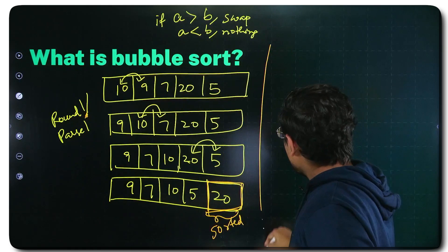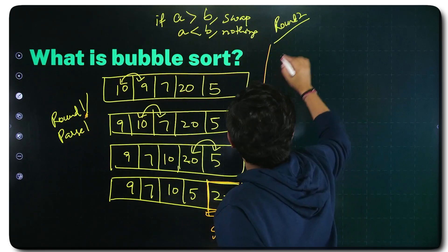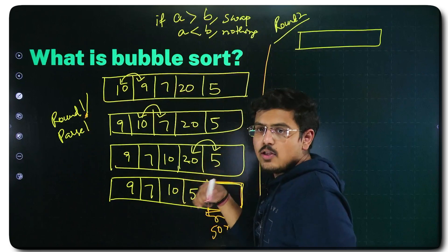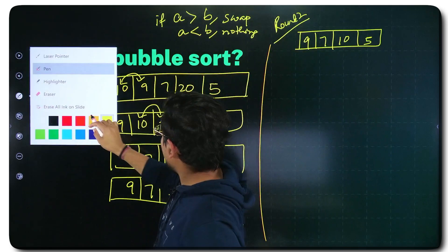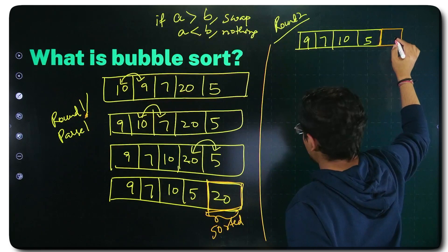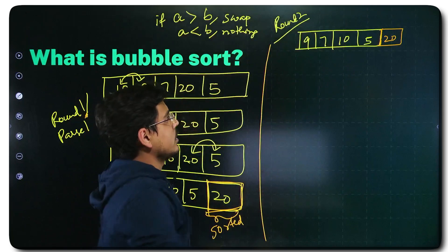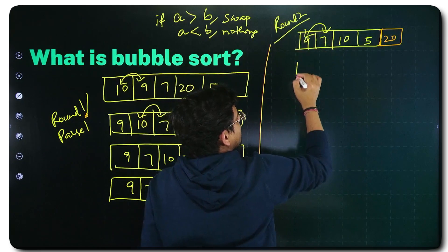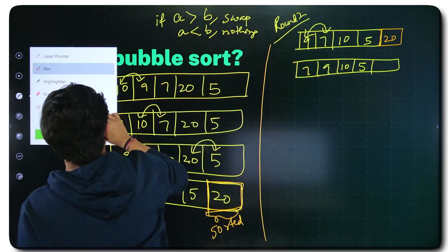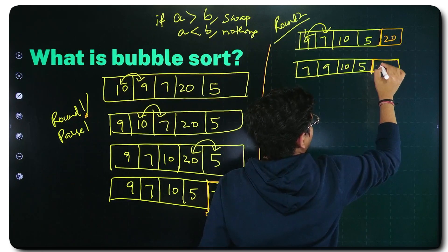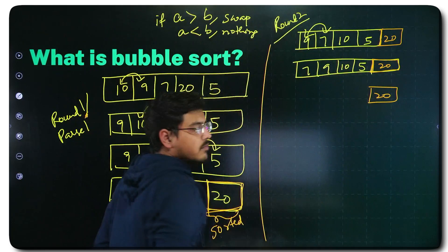Now you go through and do round 2 or parse 2. I will represent the unsorted array with yellow and the sorted array with orange. You run Bubble Sort on the unsorted portion only. 9 greater than 7 — true, swap their positions. So you have 7, 9, 10, 5 and the sorted 20 remains.